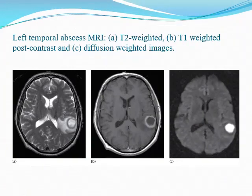This is a brain MRI showing an abscess in the left temporal region. This is T2 — in T2 we see the edema clearly and we see the abscess. In T1 we see the ring. Usually there is ring enhancement surrounded by edema.